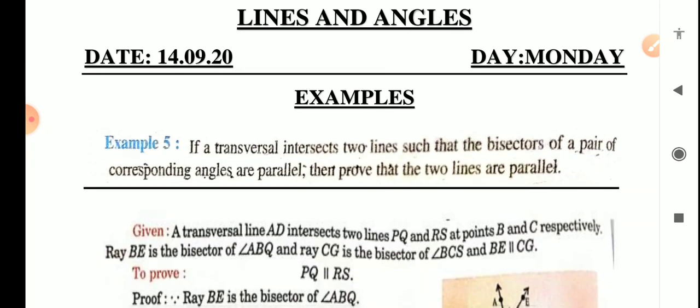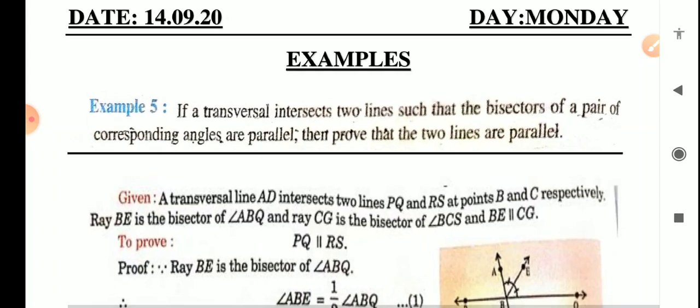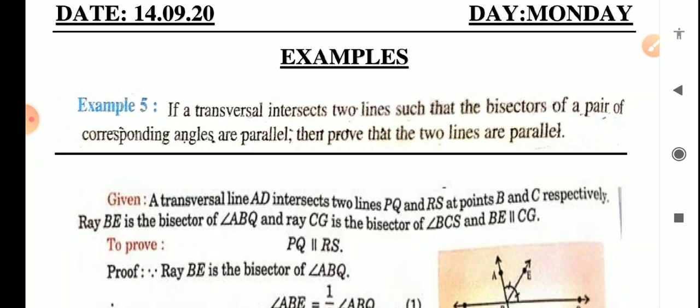Now example number 5. It is given: if a transversal intersects 2 lines such that the bisectors of a pair of corresponding angles are parallel, then prove that the 2 lines are parallel.